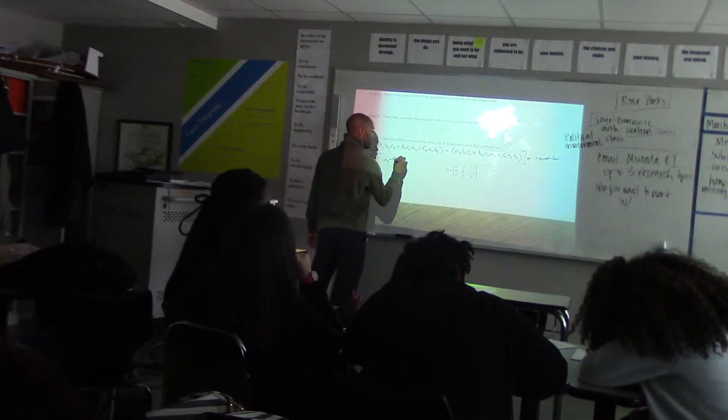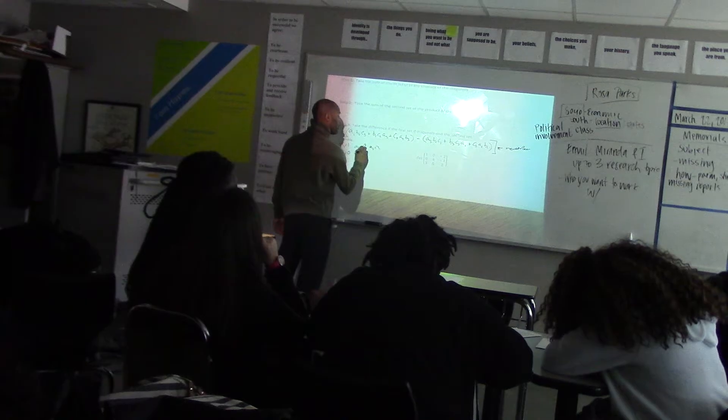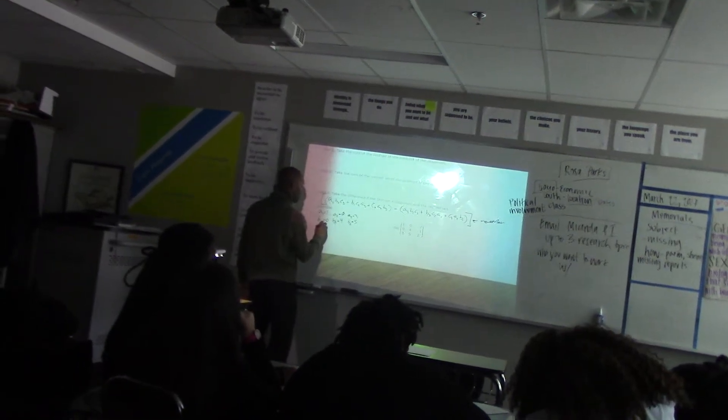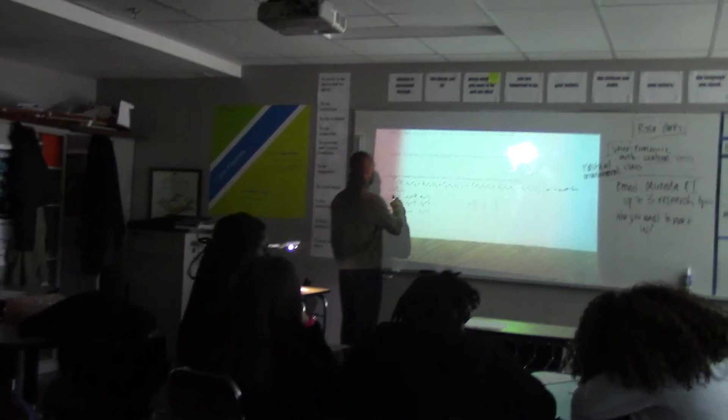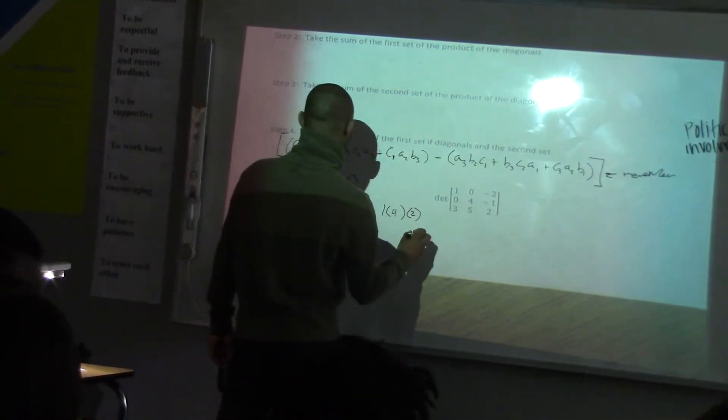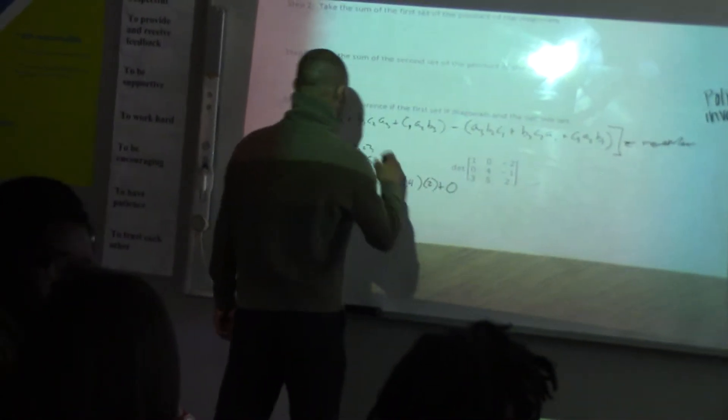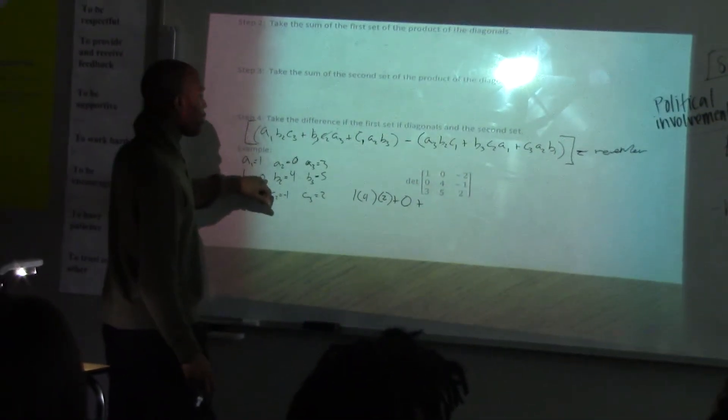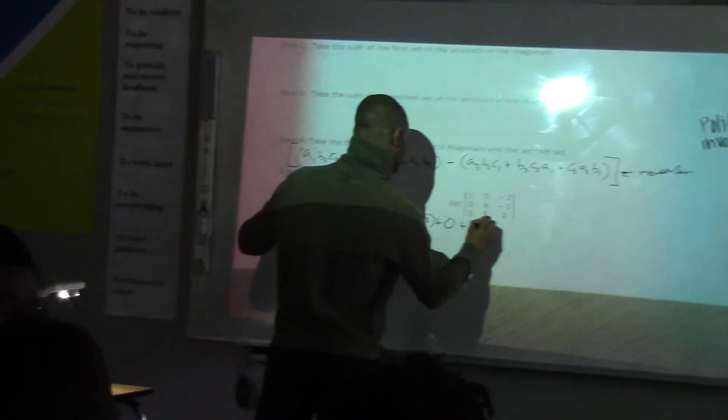So we can try this one. So we can take an example for this one. So we know A1 is equal to 1. A2 is equal to 0. A3 is equal to 3. B1 is equal to 0. B2 is equal to 4. B3 is equal to 5. C1 is equal to negative 2. B2 is equal to 1. C3 is equal to 2. And you can just put that in the formula. So you can do 1 times B2 is 4 times 2. B2 is equal to 0, plus B1, 0. The whole thing will be 0, so you can just cross that out. So it's just going to be 0.